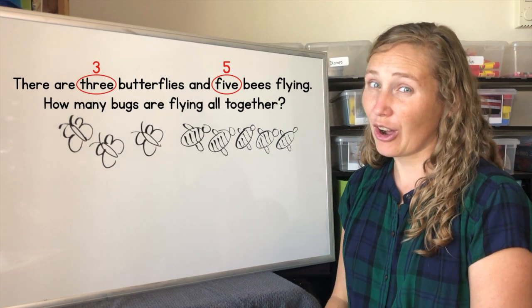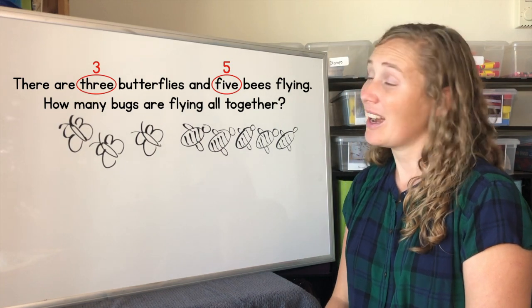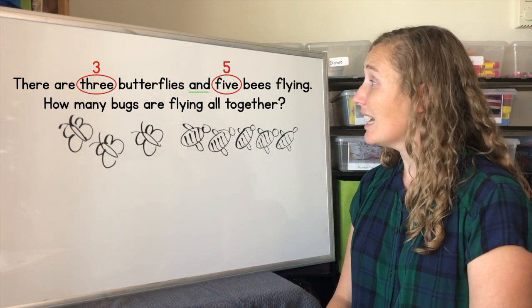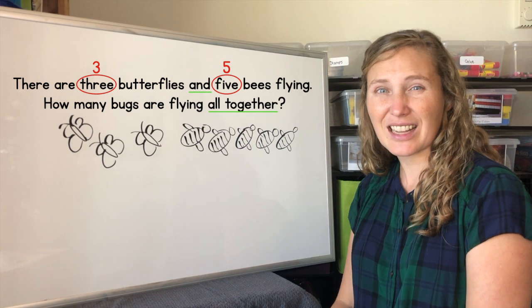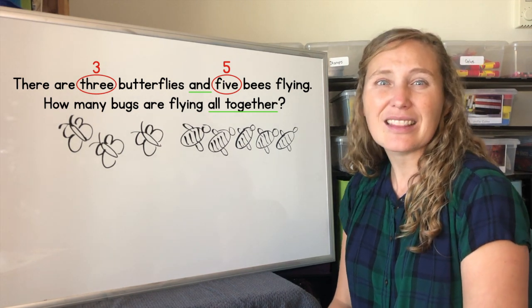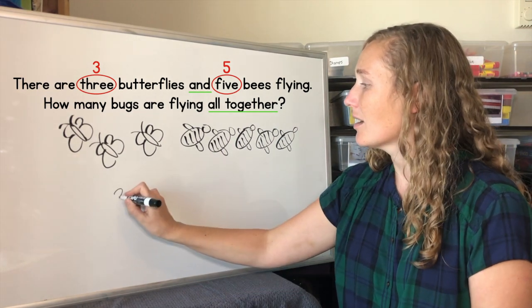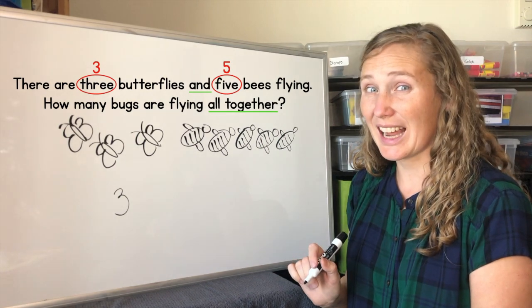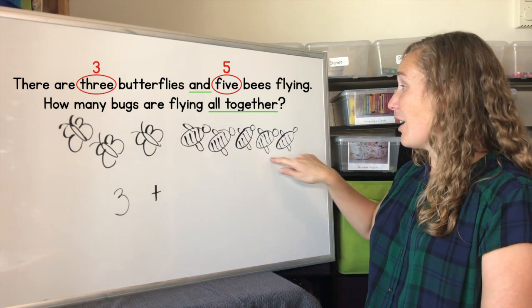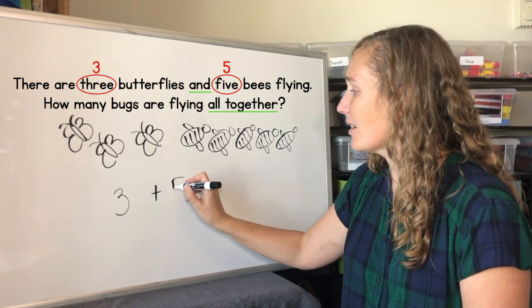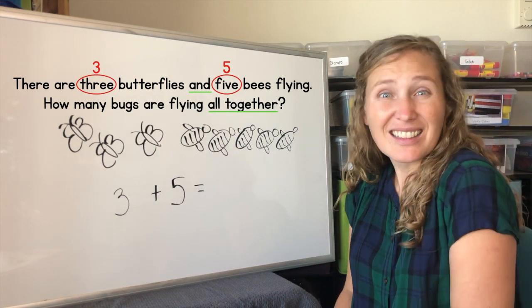Now, we can also look in our story to see what symbol we'll use. I see the words 'and' and 'all together.' 'And' and 'all together' tells us that we are adding. We need the plus symbol. We have three butterflies, and all together — remember, we need the plus symbol — five bees. Equals. How many bugs? Eight bugs. Let's count.